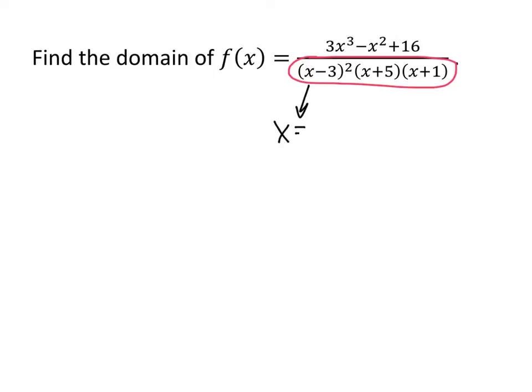We can tell that x equals 3 is going to make the bottom 0. x equals negative 5 is going to make the bottom equal to 0. And x equals negative 1. All of those are solutions to the equation, when does the denominator equal 0?